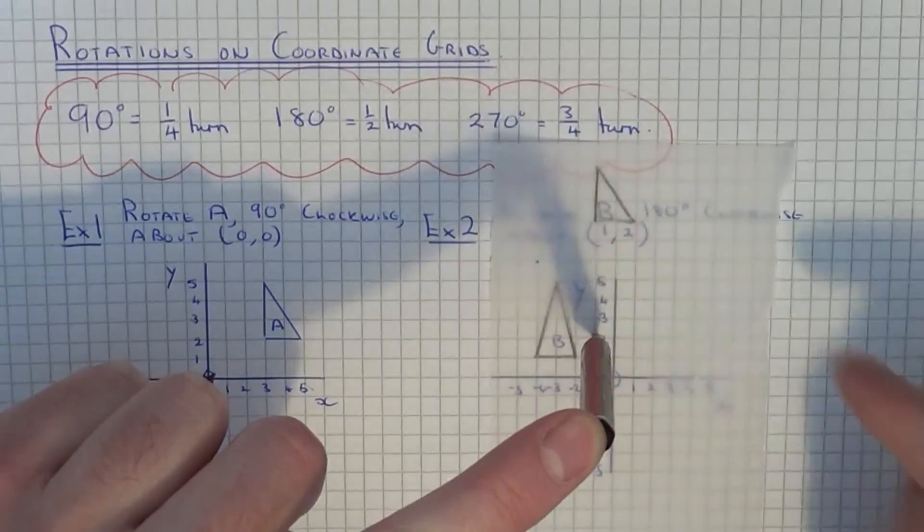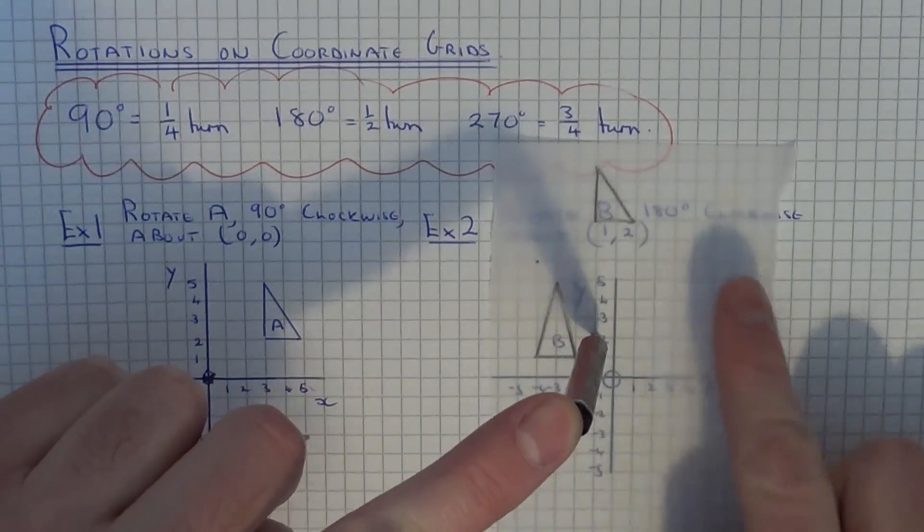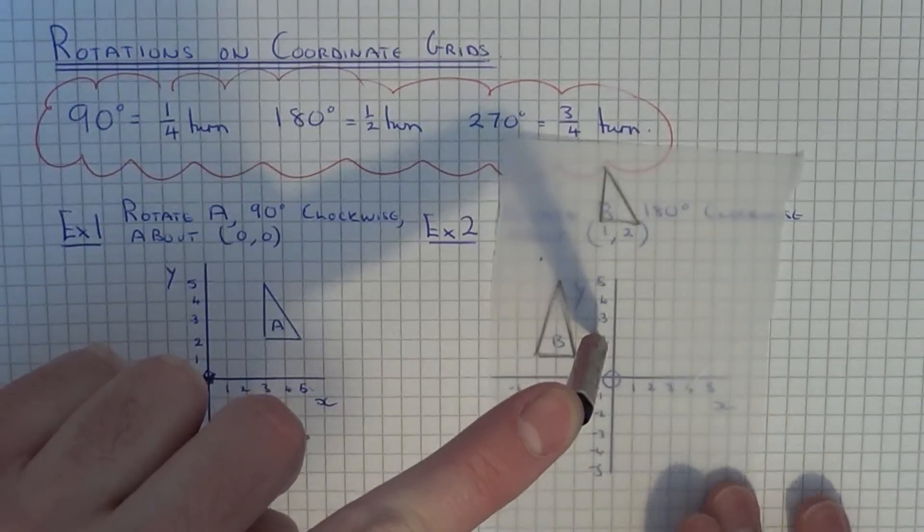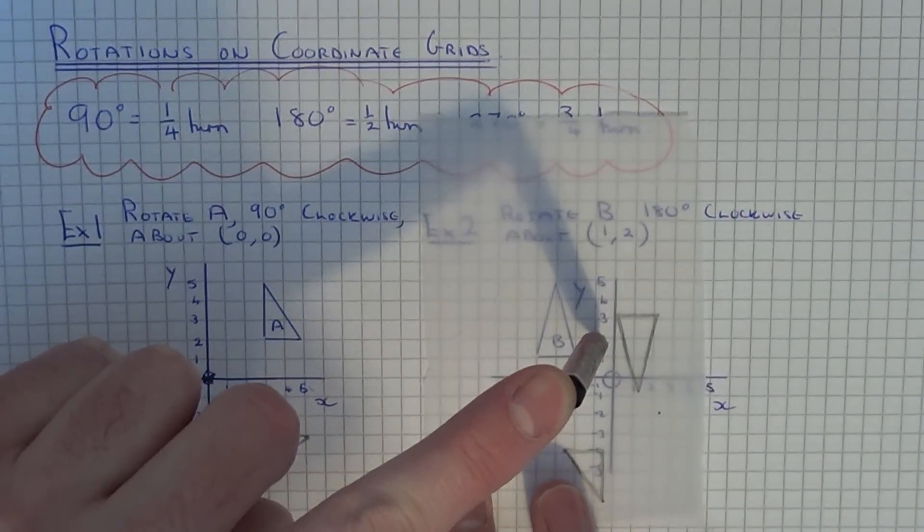A 180 degree turn is half a turn. This one's got to go in a clockwise direction. Turn that tracing paper half way around.